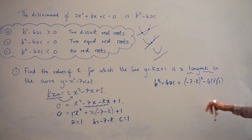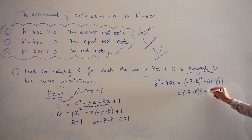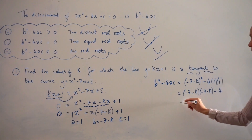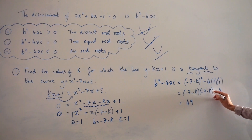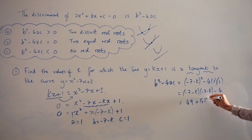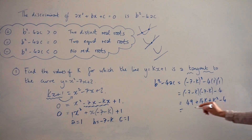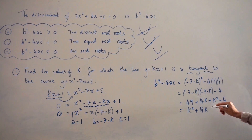Let's simplify this by expanding the brackets. Squaring means multiplying the brackets by themselves. Negative 4 times 1 times 1 is just negative 4. Expanding: negative 7 times negative 7 is 49; negative 7 times negative k is positive 7k; negative k times negative 7 is also positive 7k, which simplifies to 14k; and negative k times negative k is positive k squared. So combining: k squared plus 14k, and 49 minus 4 simplifies to 45. That is the discriminant.